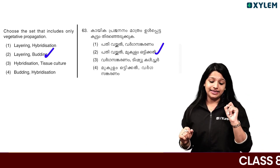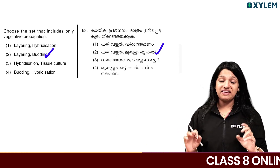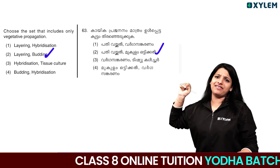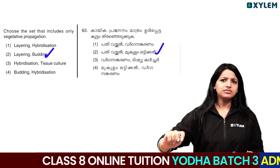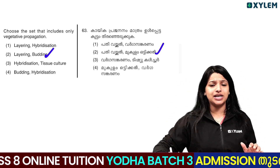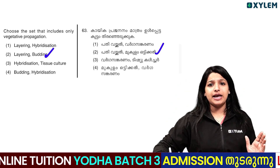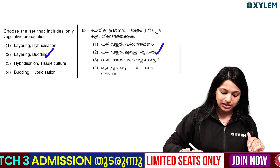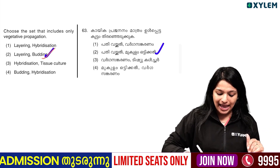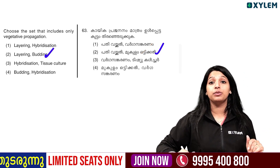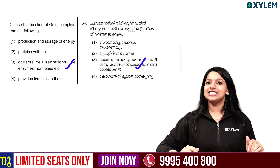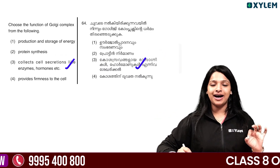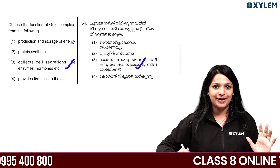Choose the set that includes only vegetative propagation. Vegetative propagation is a good thing. Tissue culture, hybridization, and vegetative propagation. Layering, budding, and other methods — these are all forms of vegetative propagation.